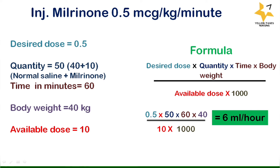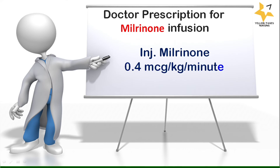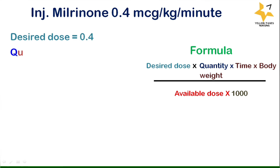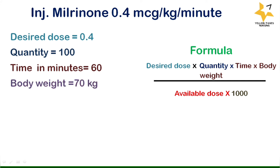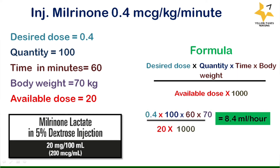Let's look into one more example using an infusion pump. The doctor's prescription is injection milrinone 0.4 microgram per kg per minute. Using milrinone lactate in 5% dextrose injection, 100 ml flexible container containing 200 microgram per ml. Body weight is 70 kg. Desired dose is 0.4, quantity is 100, time in minutes is 60, body weight is 70 kg, available dose is 20 — that is 20 mg in 100 ml. Applying all values into the formula, we get the answer: 8.4 ml per hour.